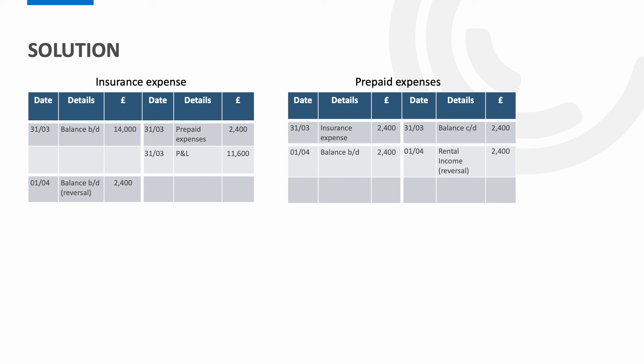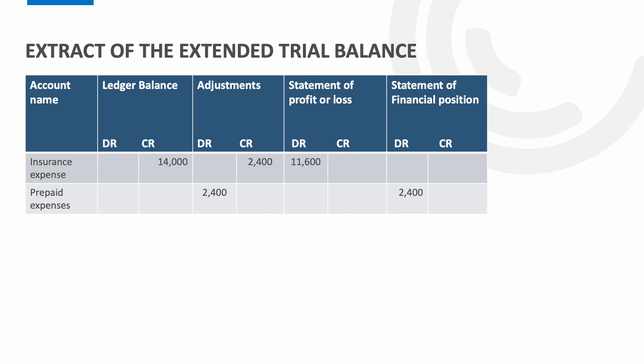The final part is just how this would look in the extended trial balance. Using case study two, we can see that the insurance expense has an existing balance of £14,000. We then enter the prepayment within the adjustments column to show the decrease to the insurance expense, and enter it on the debit side of the adjustment columns to show the amount within the prepaid expense account. The existing balance minus the adjustment is then transferred to the profit or loss, and the prepaid expense is shown as an asset within the statement of financial position.